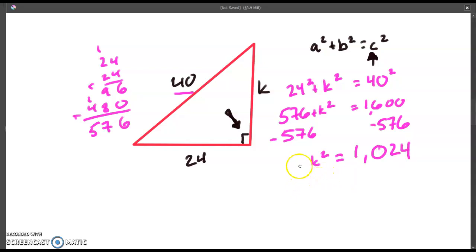In order to figure out this answer, what we're going to do is we need to take the square root of each side so that our k is going to be alone. Take the square root of k, the square root of 1,024. The square root of k squared is just k. So these cancel each other out. They go away. k is equal to the square root of 1,024.